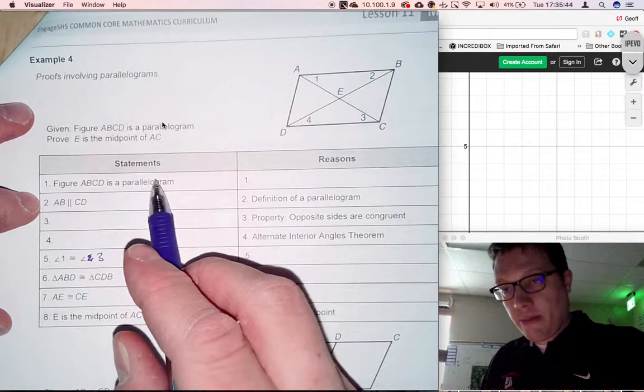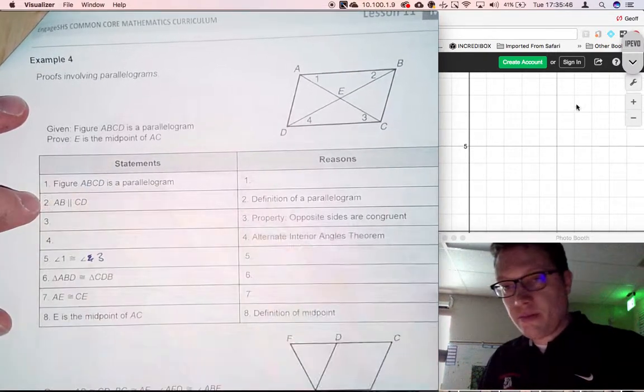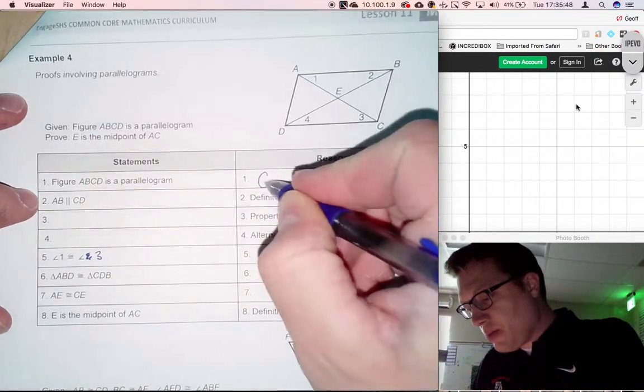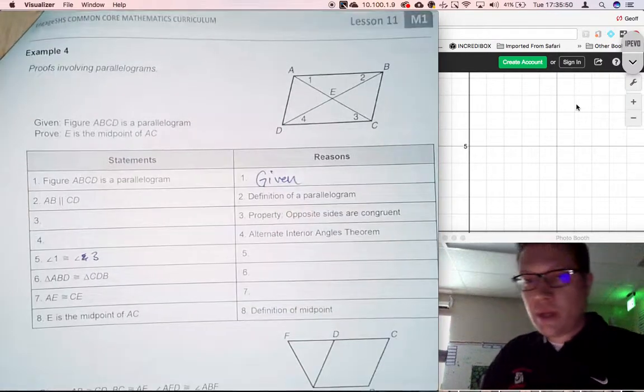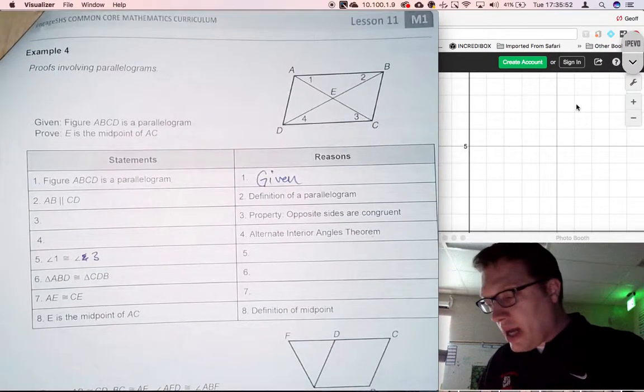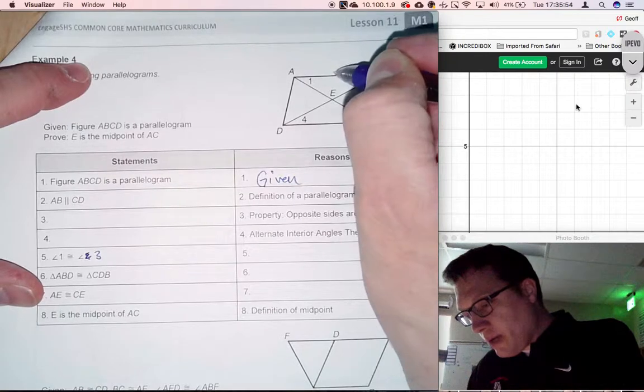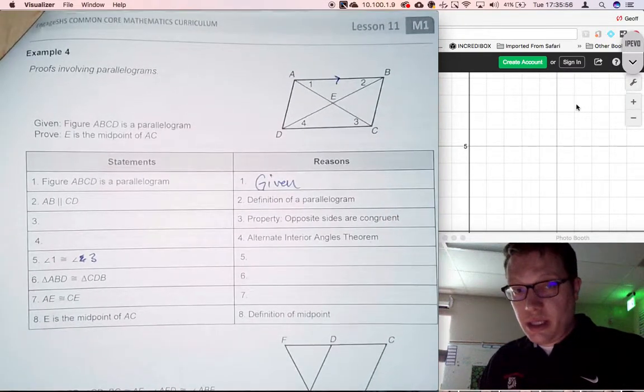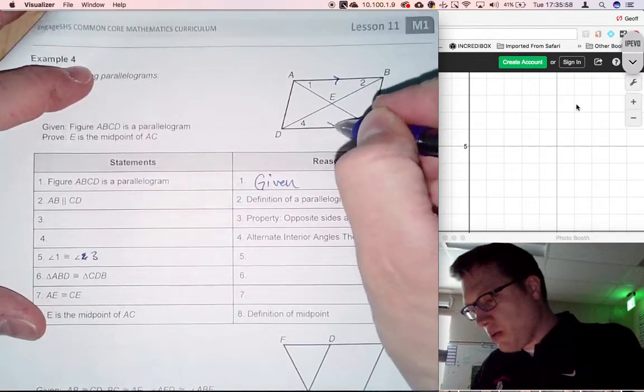Figure ABCD is a parallelogram, given. So because that's a given statement, we're going to write 'given' right here. Continuing to read down, that means AB, this line, is parallel to CD. For parallel, we use the arrows—one, two.